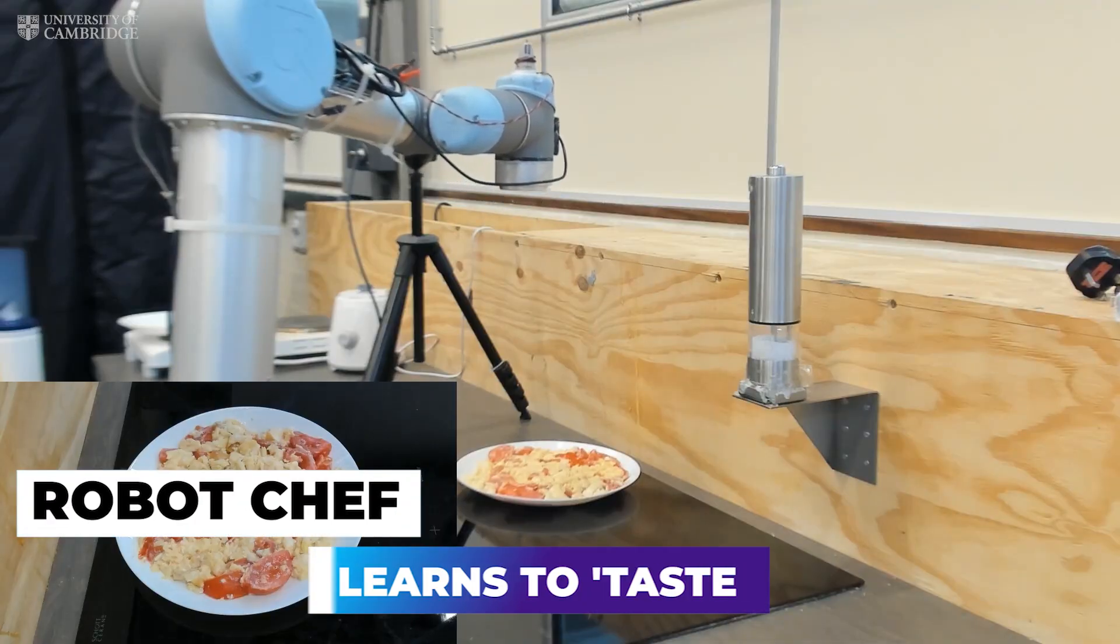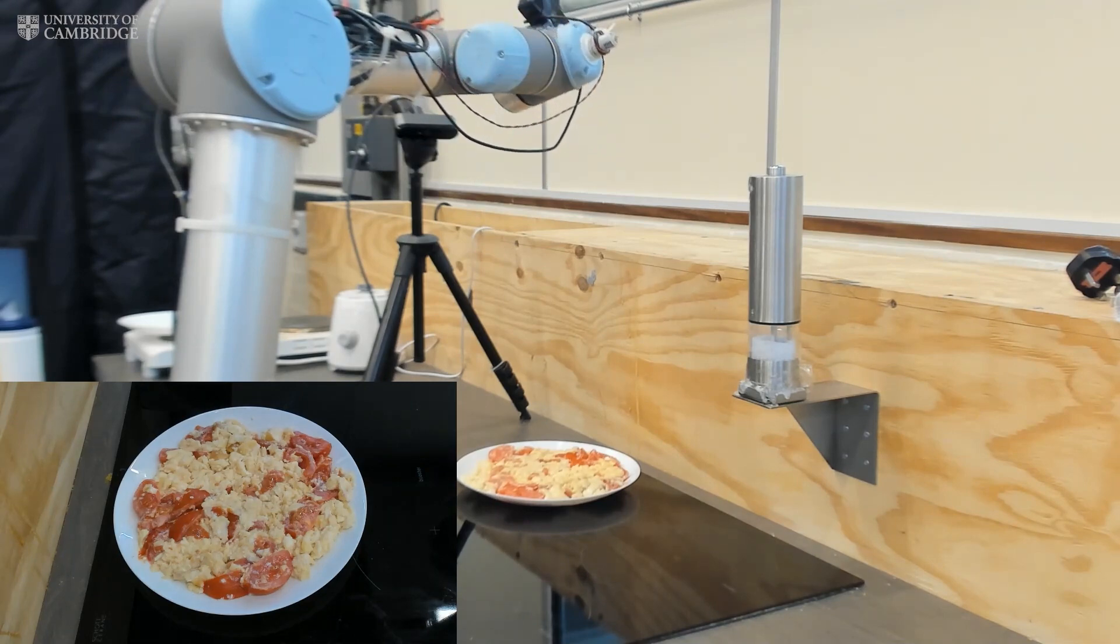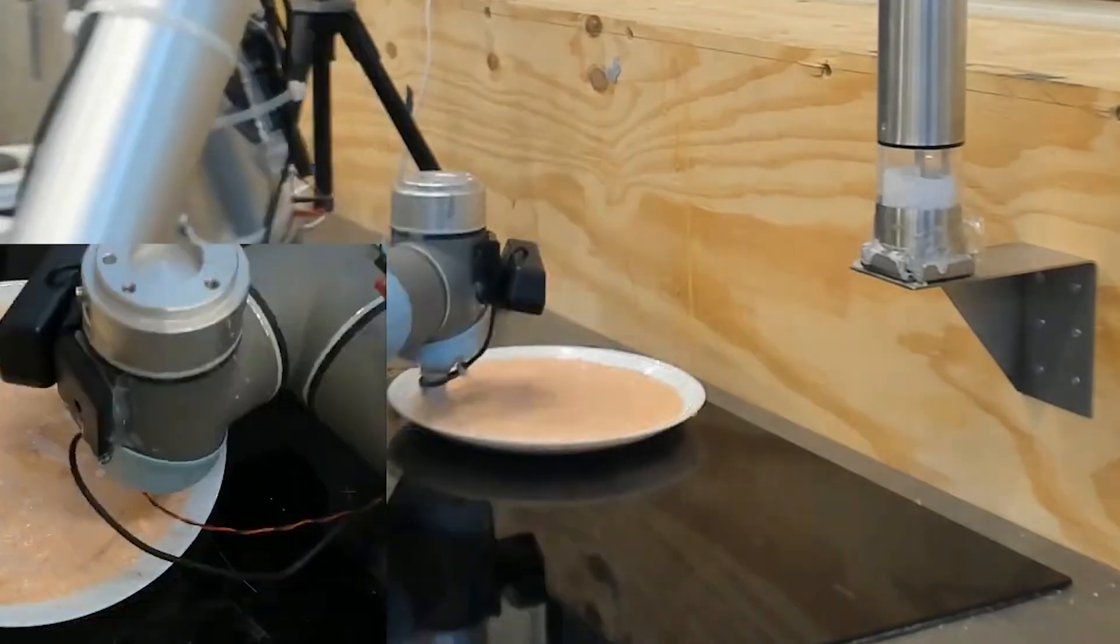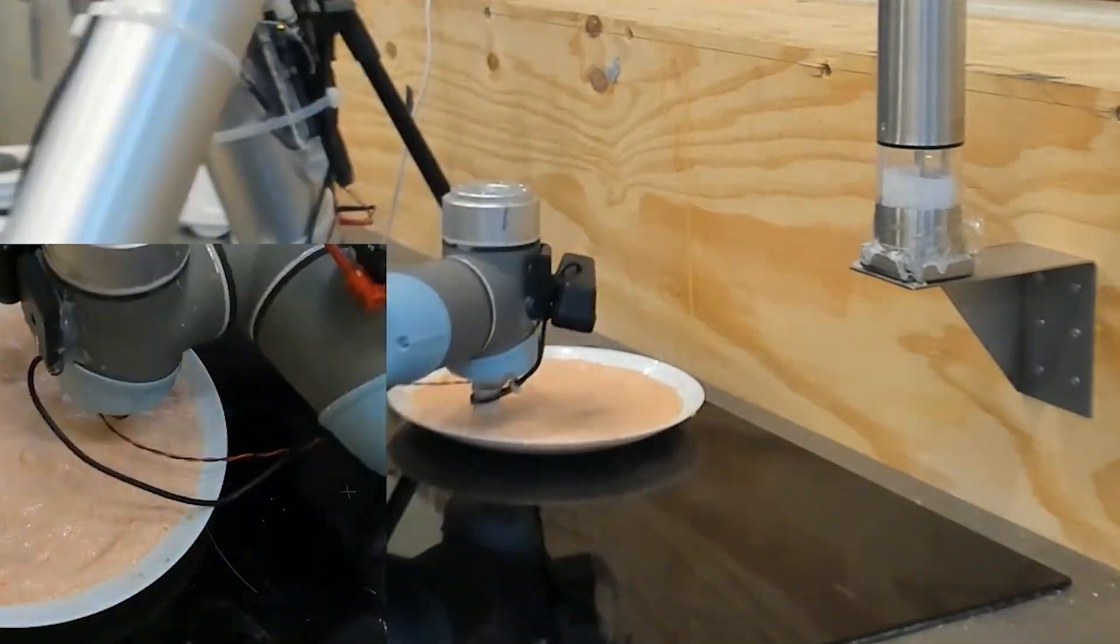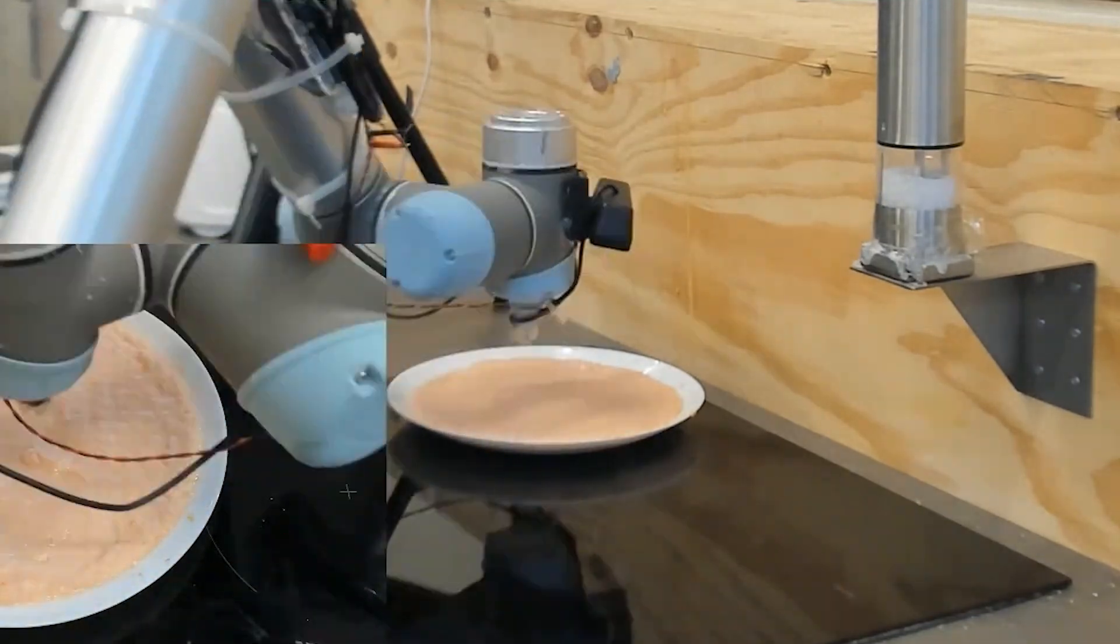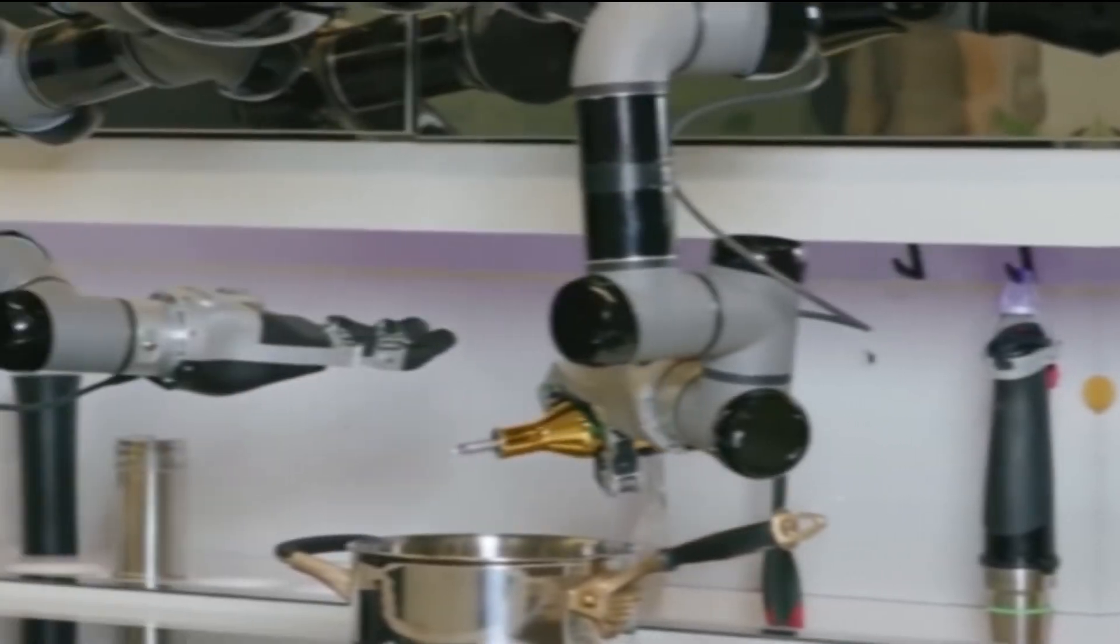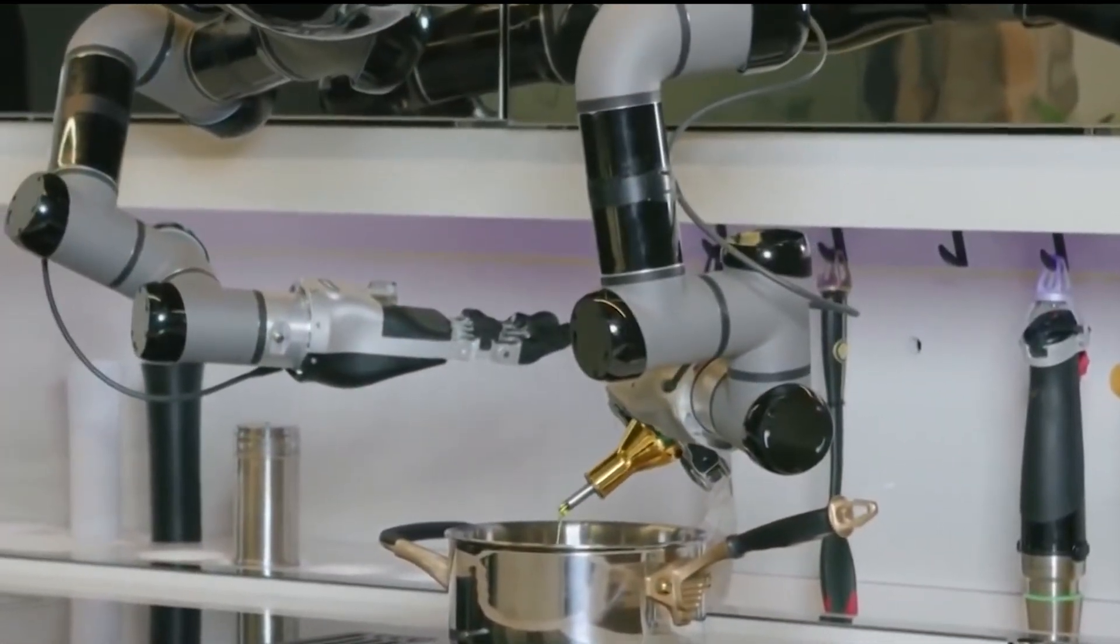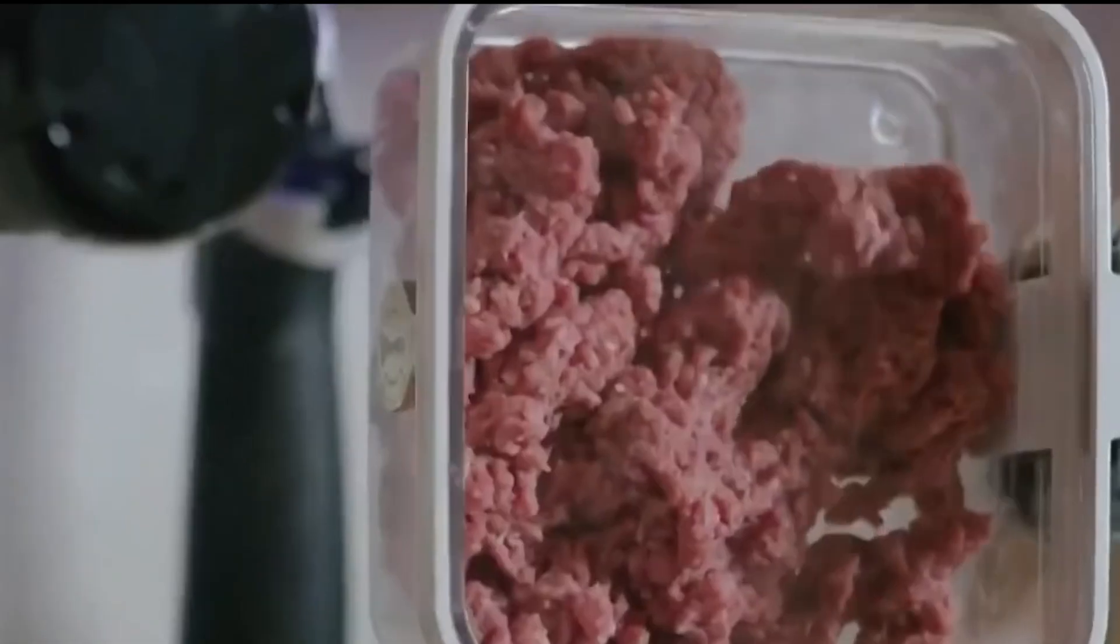Next, the robot chef learns to taste as you go. In the future, a robot cook has been taught to taste the food at various stages of the chewing process to determine if it is adequately seasoned. Researchers from the University of Cambridge trained its robot chef to judge the saltiness of a meal at different phases of the chewing process, simulating a comparable process in humans.